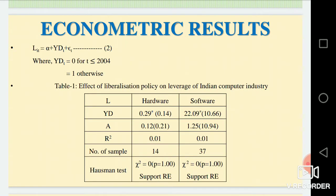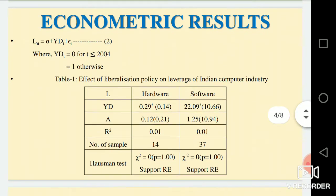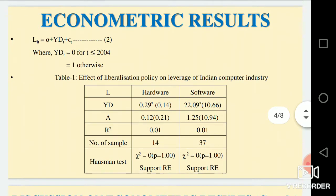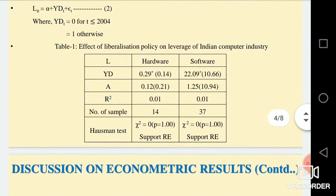Initially, we tested whether there is any relation between leverage and liberalization policy. L here is leverage, that is the liability-to-asset ratio. We considered a dummy variable because it captures all time-specific effects that reveal macro-level changes such as credit market conditions, nature of trade policy, and all other common factors faced by firms in India. We consider the year dummy after 2004, that is the period of complete elimination of tariff on computer-related products. The results state that for both the hardware and software sectors, leverage positively depends on the year dummy, and the significant panel data Hausman test supports the random effect model.